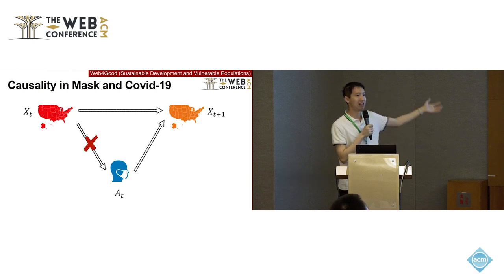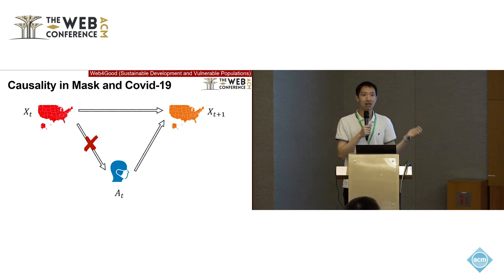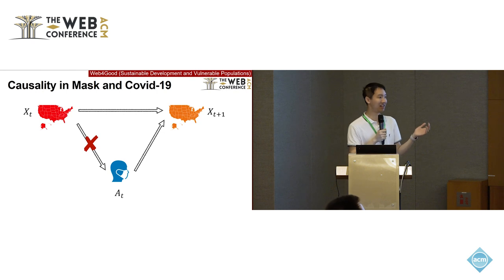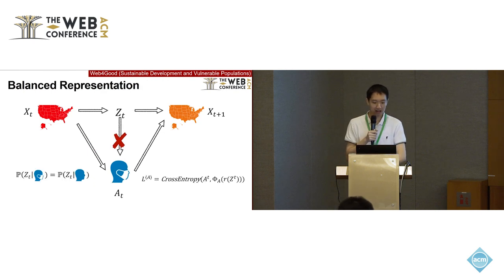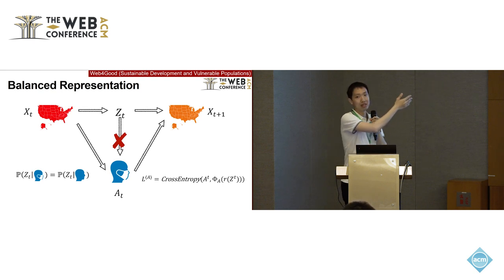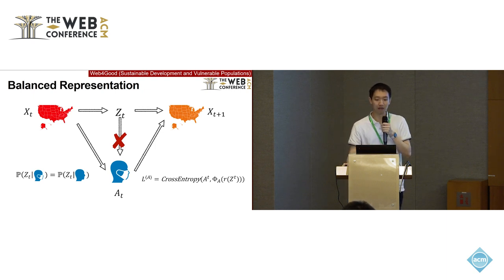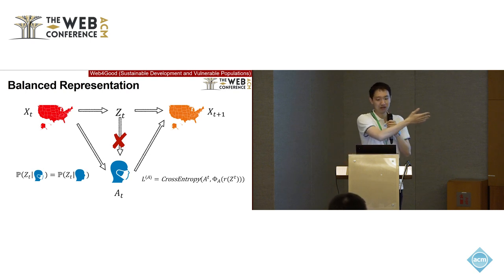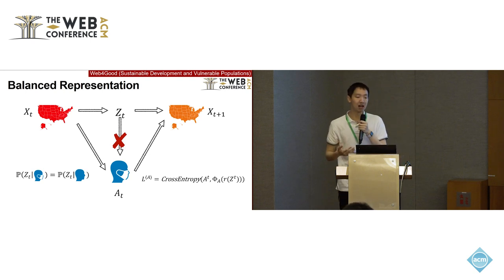We want to break this false link — we want to observe data where there is a mask policy in non-severe states, but it is counterfactual and we cannot observe that data. Therefore, we want to learn a balanced representation. ZT is our latent representation, and we want to make sure we cannot predict the mask policy from ZT. We use a cross-entropy loss and add a decoder to decode the mask policy from ZT, ensuring the latent representation cannot predict the policy.